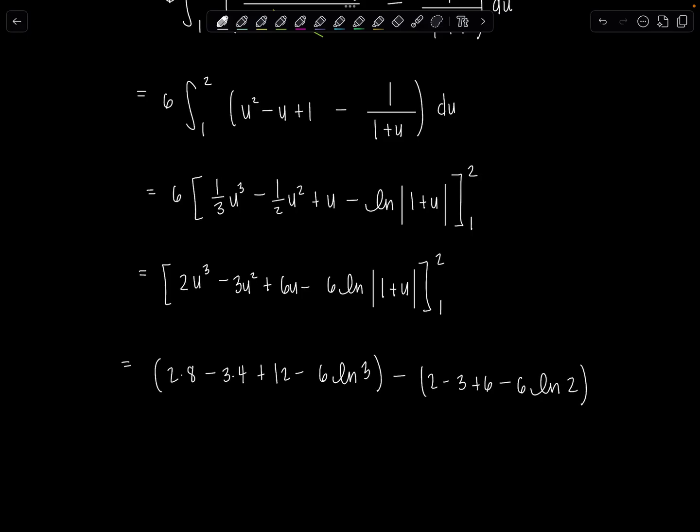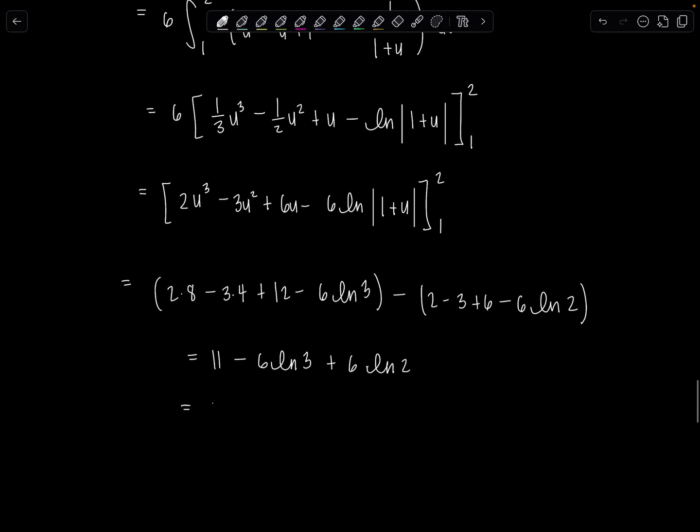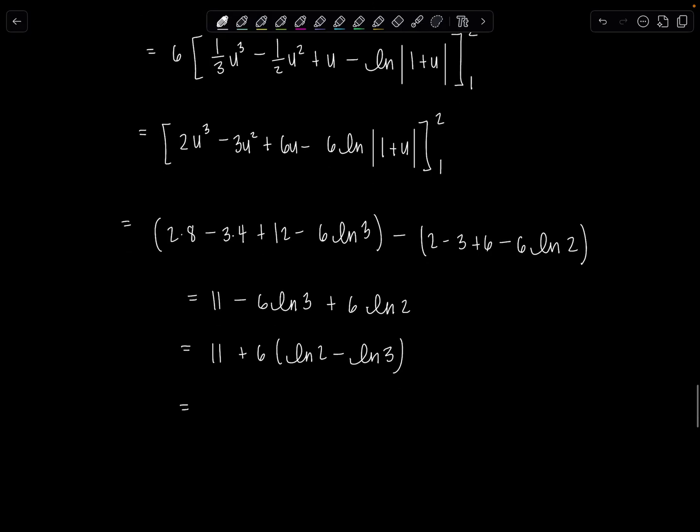Combining all your like terms, you're going to end up with 11 minus 6 ln of 3 plus 6 ln of 2. And then I can combine those, right? If I factor out the 6, then we have ln of 2 minus ln of 3, and let's use those natural log properties. 11 plus 6 ln 2/3. Voila. And we are done.